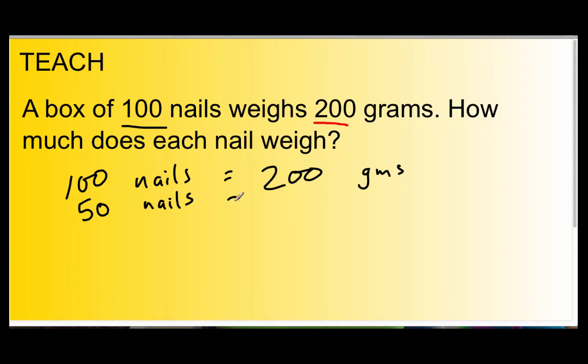If we halve 100, we get 50, don't we? So, what would be half of 200? That would be 100, wouldn't it? So, 50 nails equal 100 grams. Yeah, we could do it like this. Let's keep on going like that. What's half of 50? Well, that's 25 nails. So, 25 nails must equal half of the previous amount, which would equal 50 grams.